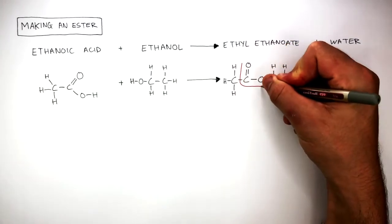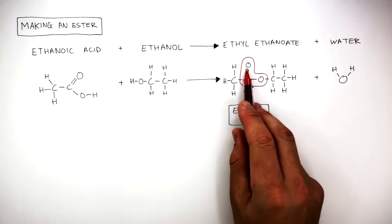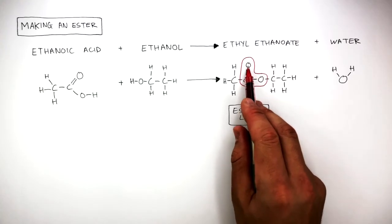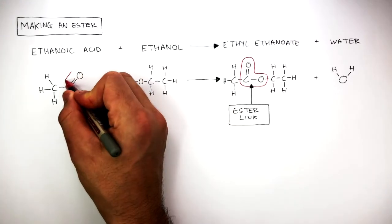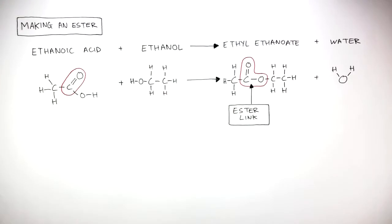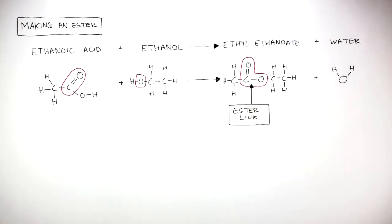Here I'm drawing around the ester link or ester functional group, and we can see how the double bond between the carbon and oxygen atom comes from the double bond between the carbon and oxygen atom on the ethanoic acid. And the oxygen atom in the ester link or ester functional group is the oxygen atom found on the ethanol molecule.